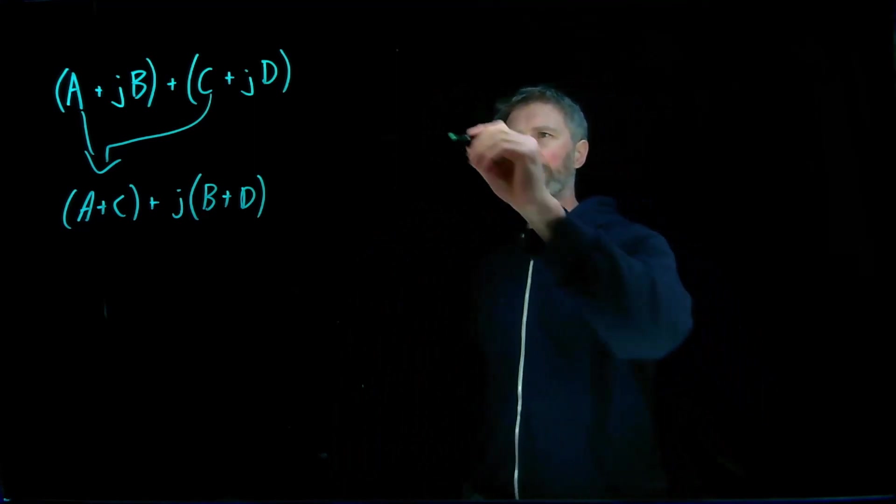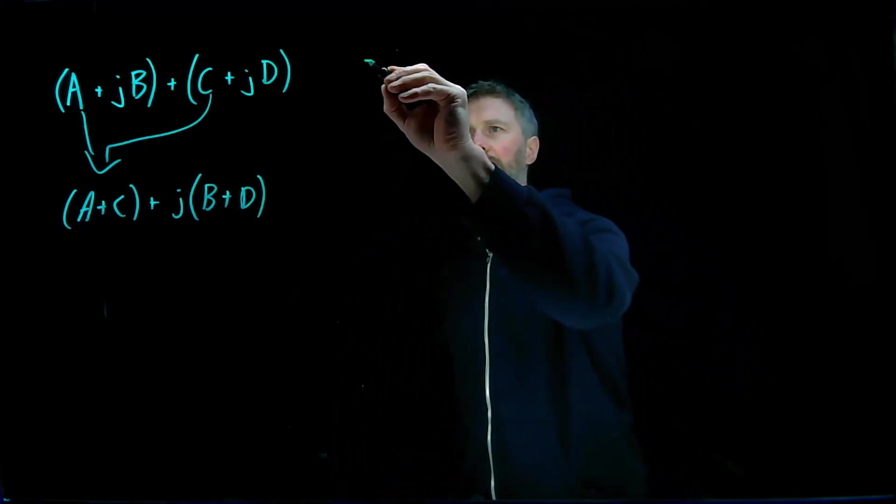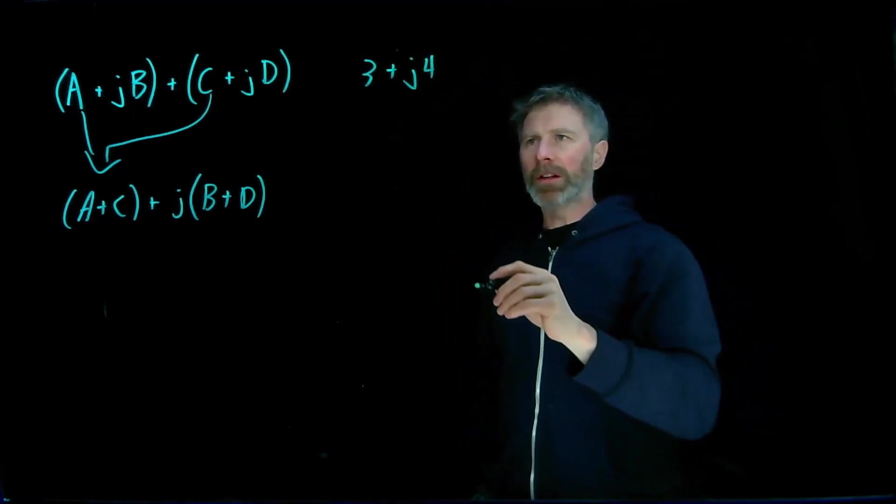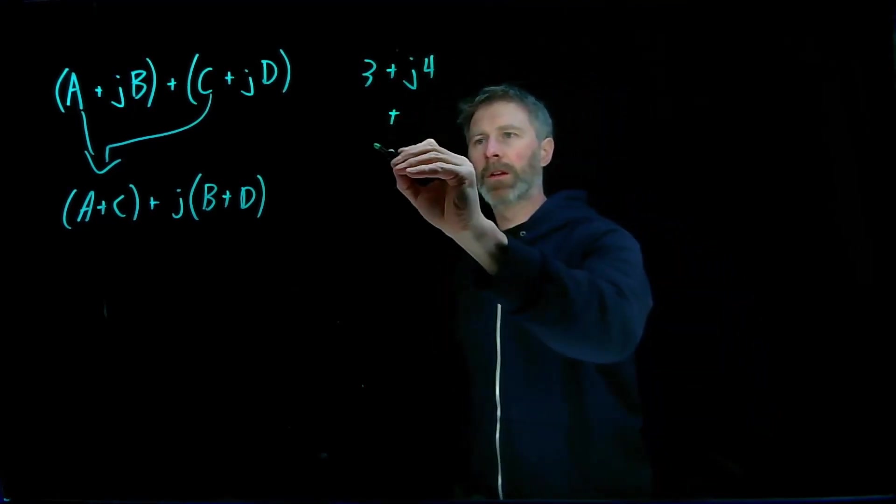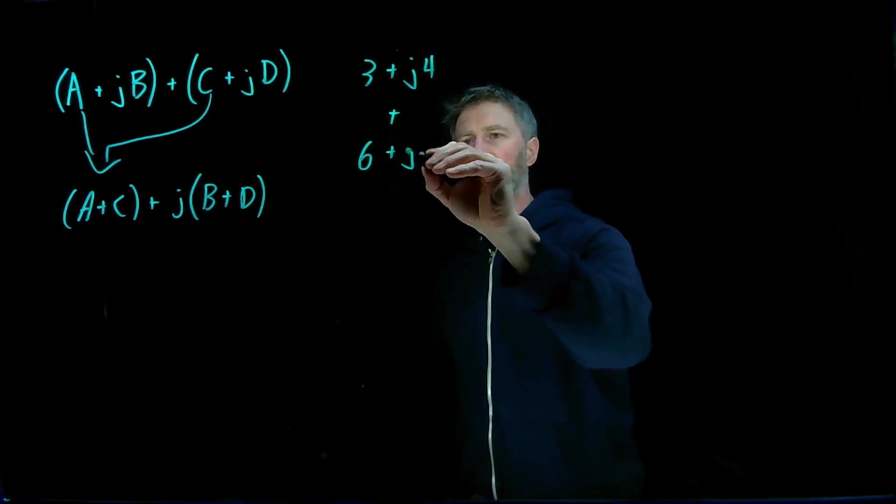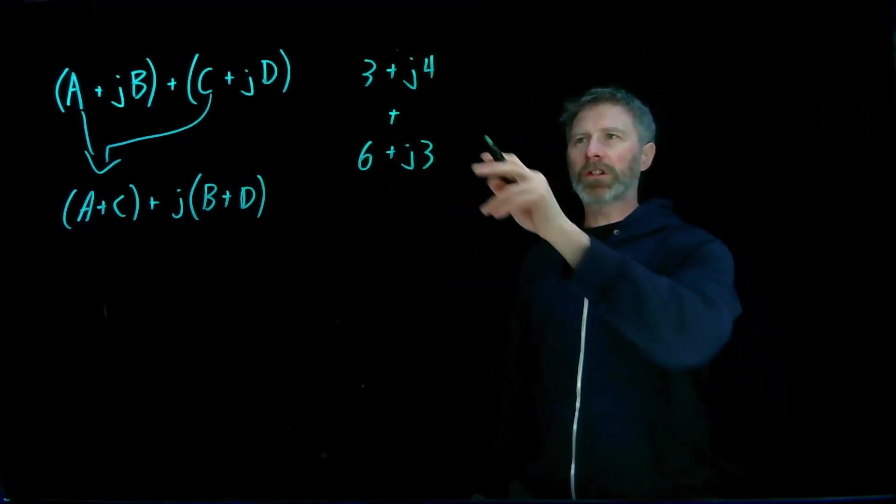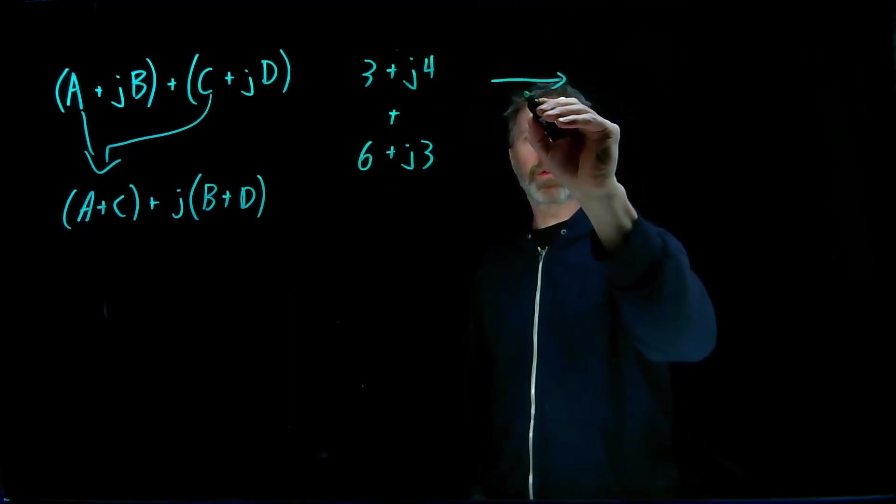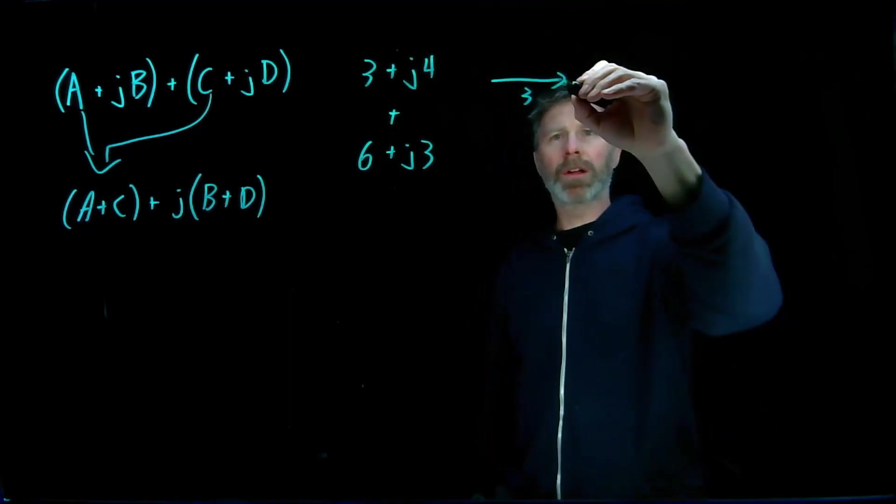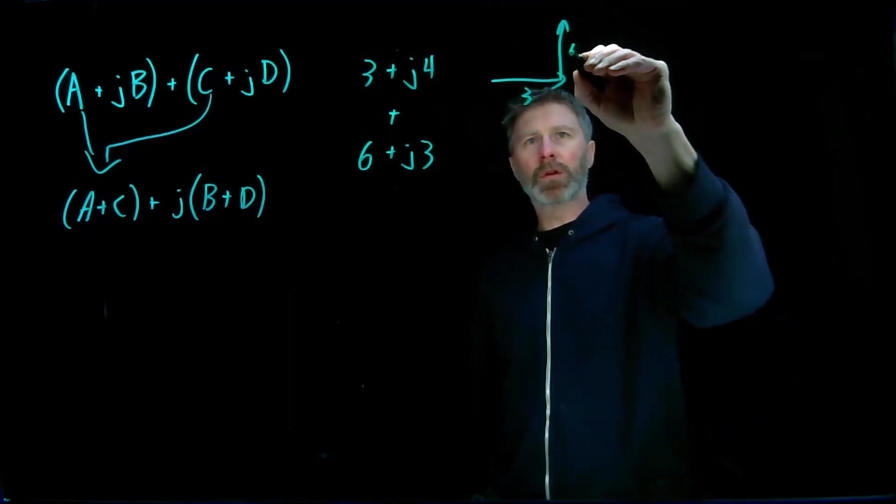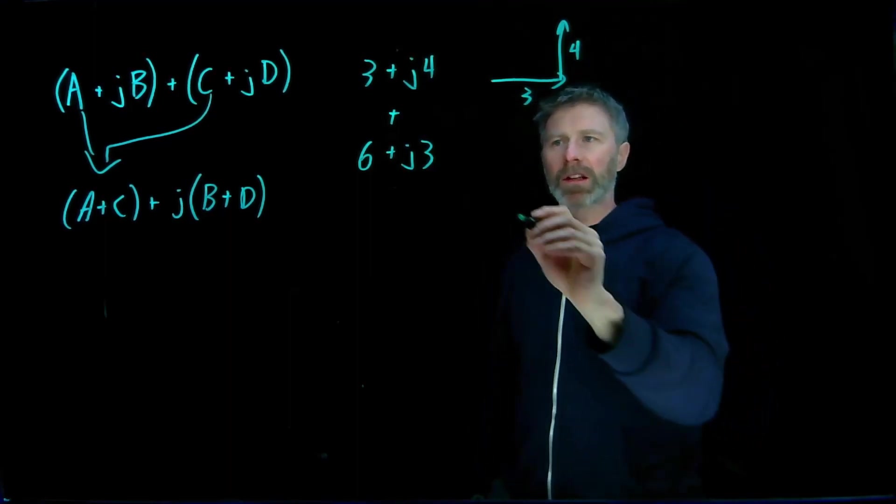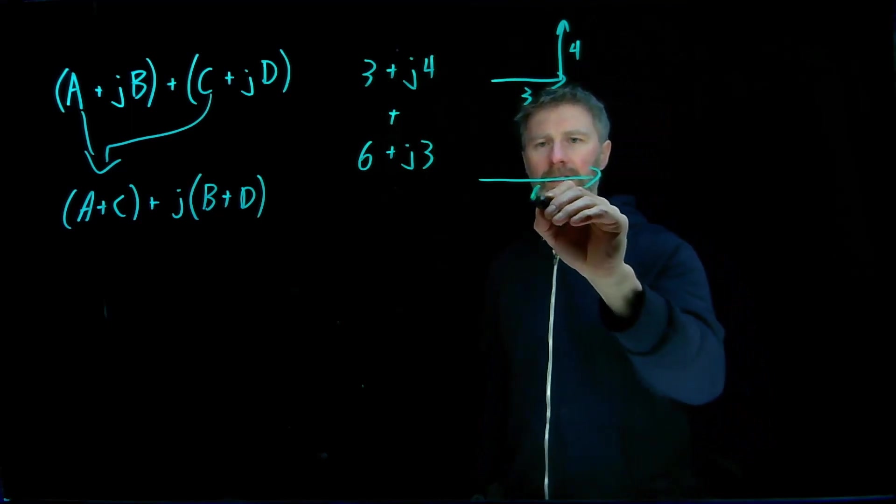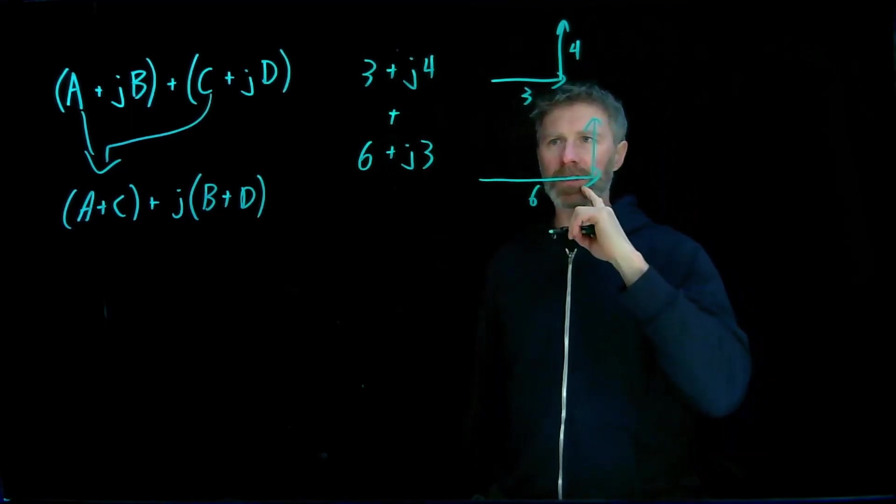And the reason this works so well, if you think about, let's take a real example. Let's go 3 plus j4 as one of my complex numbers, and I'm going to add it to 6 plus j3. So in terms of what this looks like in the coordinate system, it's going to be 3 units this way in the real axis, and then 4 units that way in the imaginary axis. And this one is 6 units in the real axis, and 3 units in the imaginary axis.